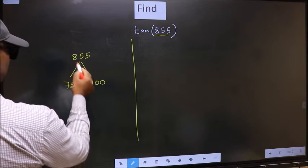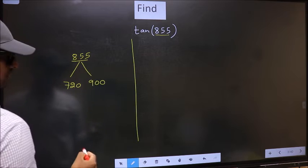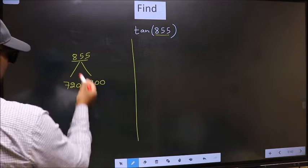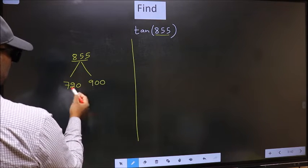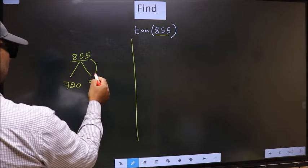Between these two numbers, 855 lies. Next, 855 is close to which number? This is close to 900.